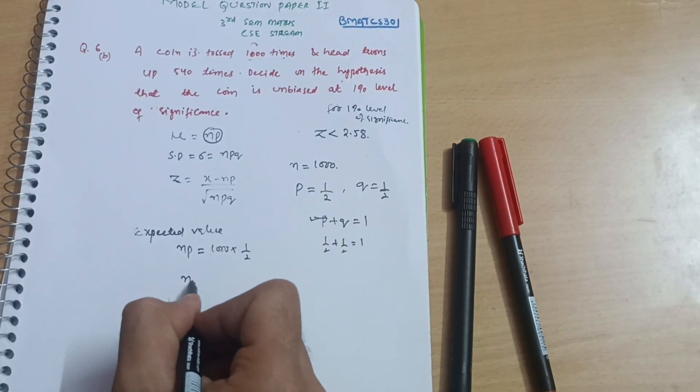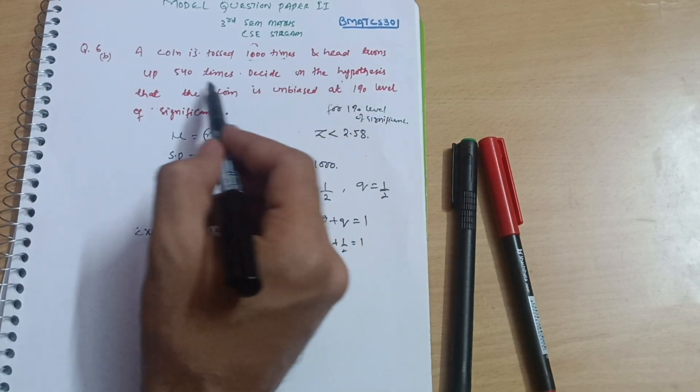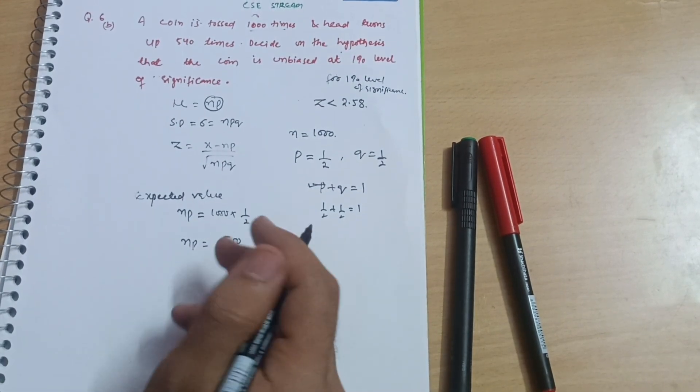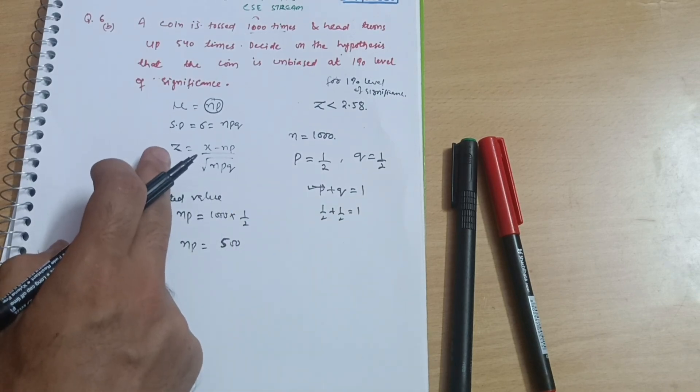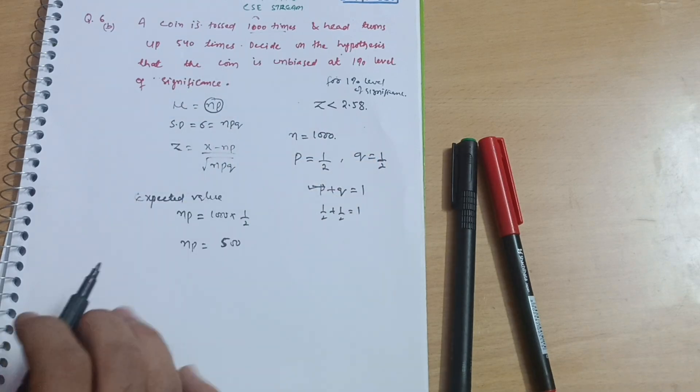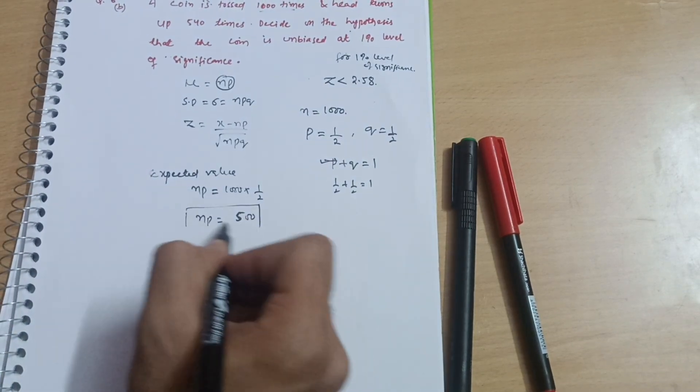Expected value np equals n, which is given as 1000, times probability 1 by 2. So you will get np equals 500. In the question it is 540, but the expected value is 500. That is why we calculate this z value to get exact information about whether the coin is biased or unbiased.